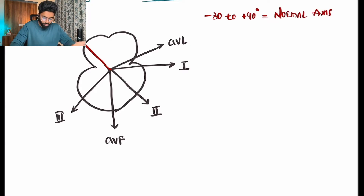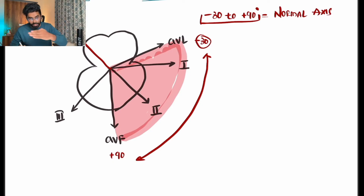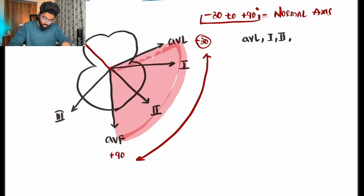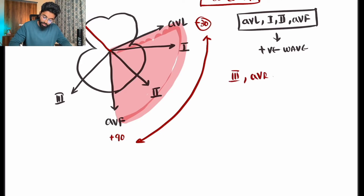The normal cardiac axis is between minus 30 and plus 90 degrees. Since current moves towards the positive electrode from endocardium to pericardium, the leads within the normal axis — aVL, I, II, and aVF — will show positive deflections. Leads outside the normal axis, such as Lead III and aVR, will show negative deflections.